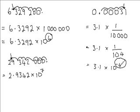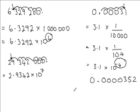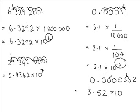So if we do another small number, 0.0000352, the number between 1 and 10 would be 3.52. We are placing the decimal point between the 3 and the 5, and the difference between where it is originally and where we are placing it is 5 spaces. So in standard form, 0.0000352 is 3.52 times 10 to the power of minus 5.